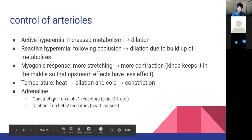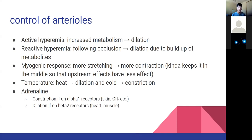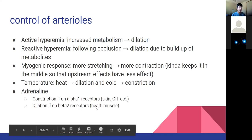Adrenaline has varying effects on different receptors. On alpha-1 receptors - found in skin and the digestive system - this will result in constriction. However, if it attaches onto beta-2 receptors, such as in our heart and muscle cells, this will result in dilation. We don't need much blood to the digestive system during fight or flight, so we restrict flow there. However, we do need a lot of blood going to the heart and muscles, which is why we dilate the arterioles there.